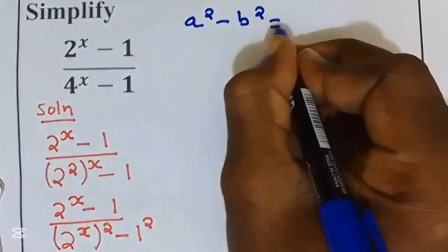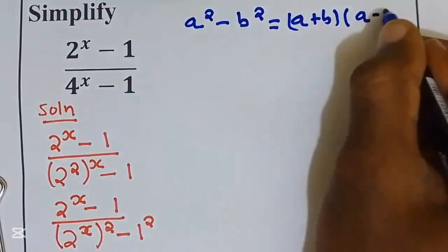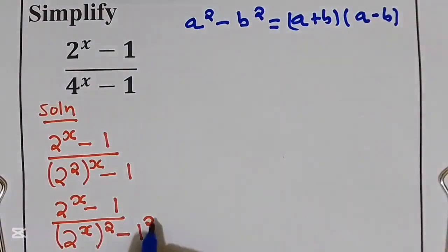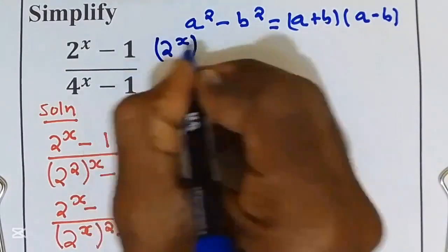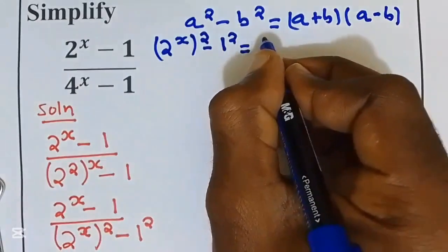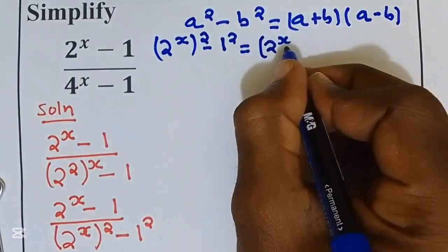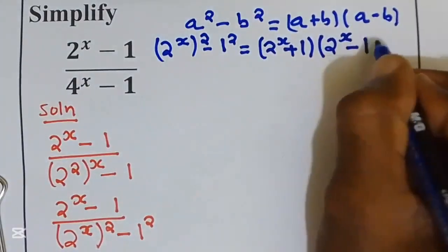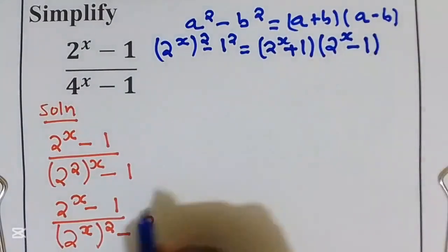The formula is a^2 - b^2 = (a + b)(a - b). Let's apply this to the denominator: (2^x)^2 - 1^2 equals (2^x + 1)(2^x - 1). This is my denominator.